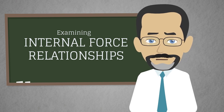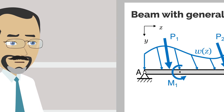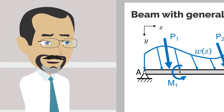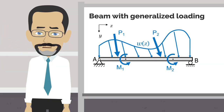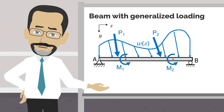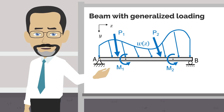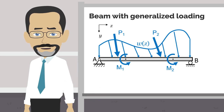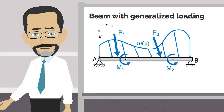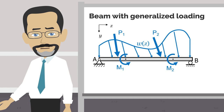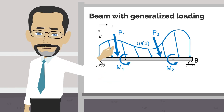But back to the lesson. How can we generalize the internal loading within a beam? Consider a beam in two dimensions with load acting in the ZY plane. This beam can be subjected to distributed loads, point loads, and moment couples along its length, where the location, distribution, and orientation of these loads can all vary.